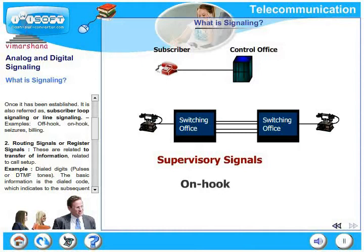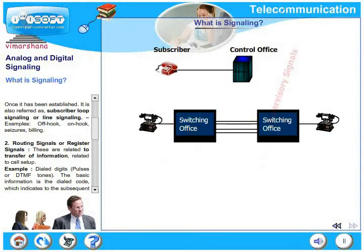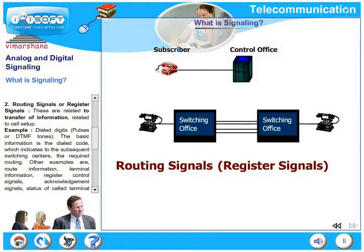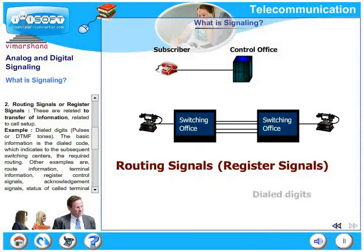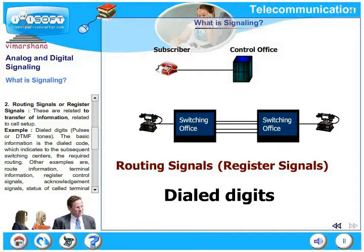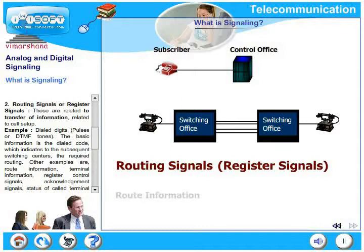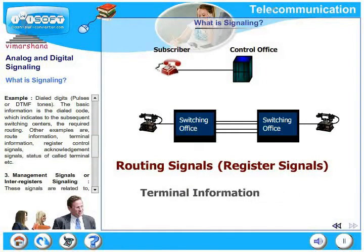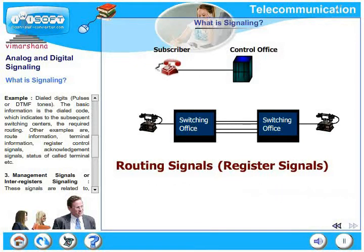Examples of supervisory signals include off hook, on hook, ceasing the line, and billing. The next type is routing signals or register signals, which are related to transfer of information for call setup. Examples include dialed digits — pulses or DTMF tones. The basic information is the dialed code, which indicates to subsequent switching centers the required routing. Other examples are route information, terminal information, register control signals, acknowledgement signals, and status of call terminals.